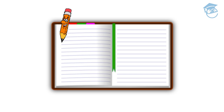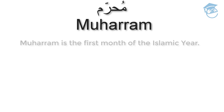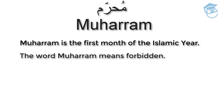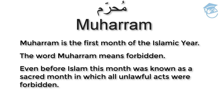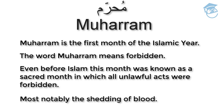Now get your notebook and write down each of the months of the Islamic calendar. Muharram is the first month of the Islamic year. The word Muharram means 'forbidden.' Even before Islam, this month was known as a sacred month in which all unlawful acts were forbidden, most notably the shedding of blood. The second month of the Islamic year is Safar. Safar means 'the whistling of the wind.'